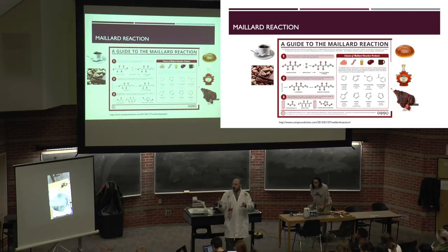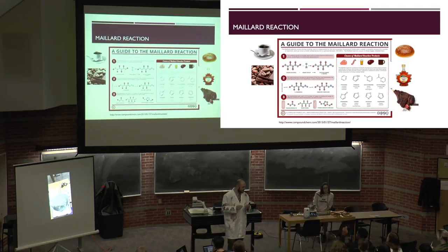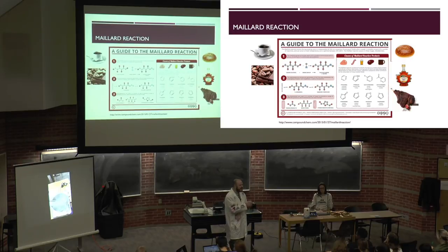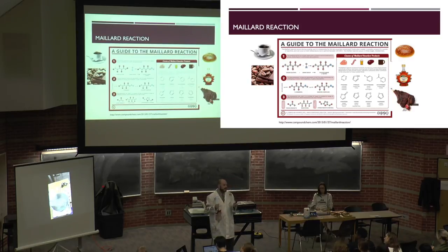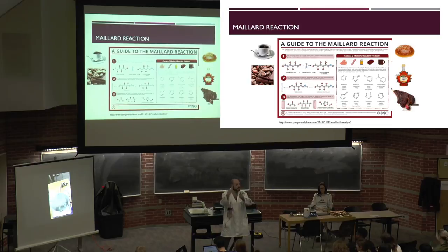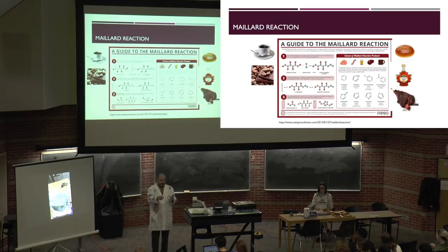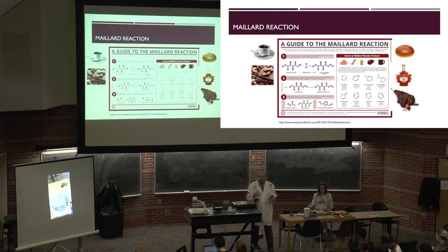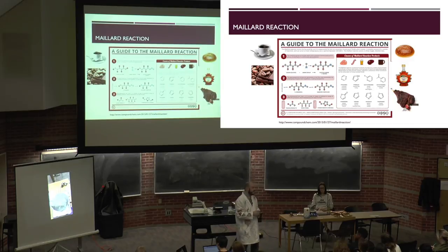Does anyone remember from first-year physics what leads to color — why some molecules appear colored? The answer is conjugation: the presence of a double bond, single bond, double bond, single bond, or an aromatic ring like benzene. Those long conjugated structures allow for electrons or energy to be transmitted across the molecule, allowing for absorption and sometimes emission of light — phosphorescence or fluorescence.